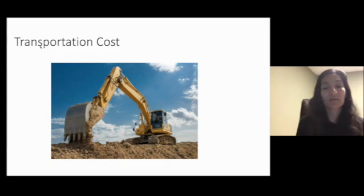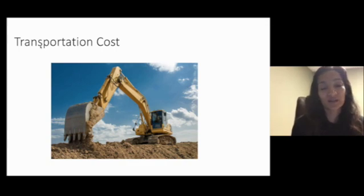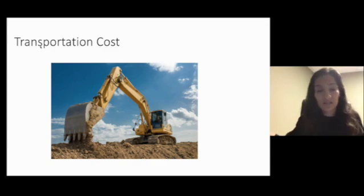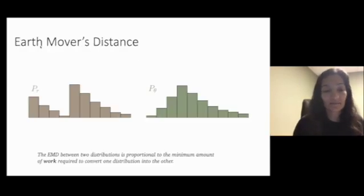They do that by way of something called transportation cost. A good analogy for this is actually this earth mover's vehicle. This vehicle is literally transporting a pile of dirt from one location to another. And if you measure how much work this vehicle is doing, then you get an idea of how distant those piles of dirt from the beginning to the end were. The earth mover's distance between two distributions similarly is proportional to the minimum amount of work required to convert one distribution to another.